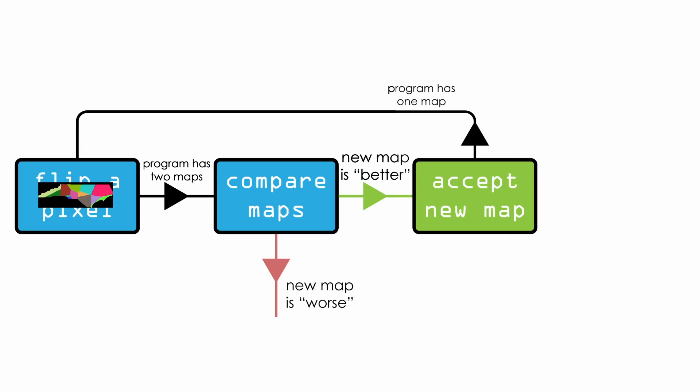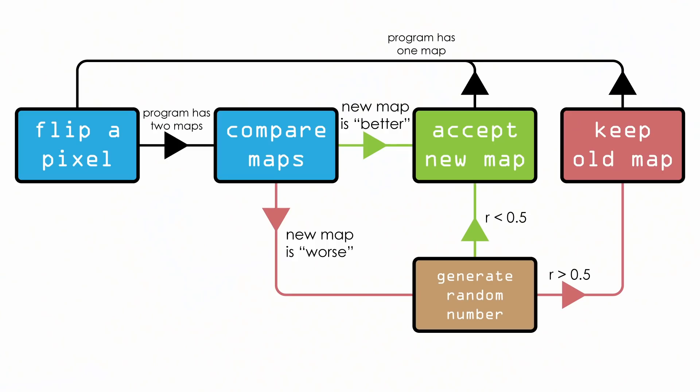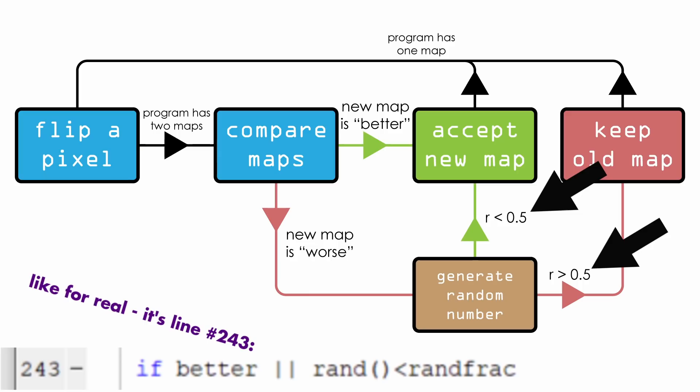If the program decides by its criteria that the new map is better, it keeps that map and we've incremented one step of the algorithm — one pixel has been changed. But if the program deems the new map inferior, it rolls some dice and sometimes accepts the new map anyway, even though it's a worse fit. It's this willingness to take steps backwards that actually allows this code to work. At the beginning when I removed the randomness, this is the number I was changing: the fraction of bad maps that slip through and get accepted.